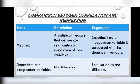Comparison between correlation and regression: Correlation is a statistical measure that defines the association of two variables. Regression is used to describe how an independent variable is associated with the dependent variable.